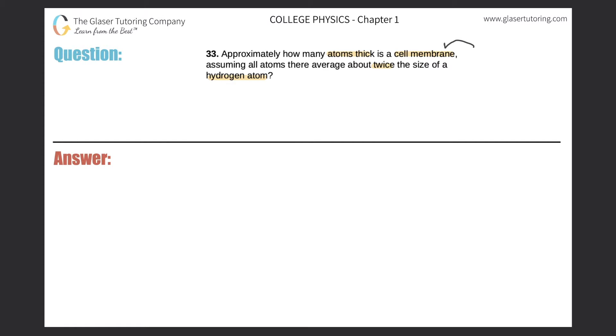So let's first assume that the average thickness of a cell membrane is 10 raised to the negative 8 meters. That's the average thickness of the membrane.